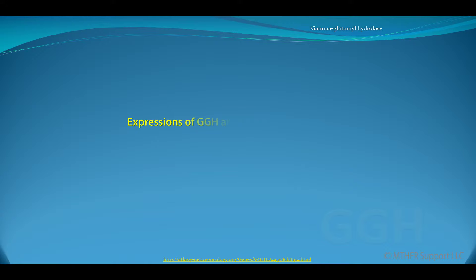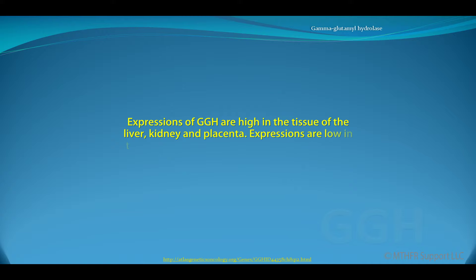Expressions of GGH are high in the tissue of the liver, kidney, and placenta. Expressions are low in the spleen, small intestine, and peripheral blood leukocytes.